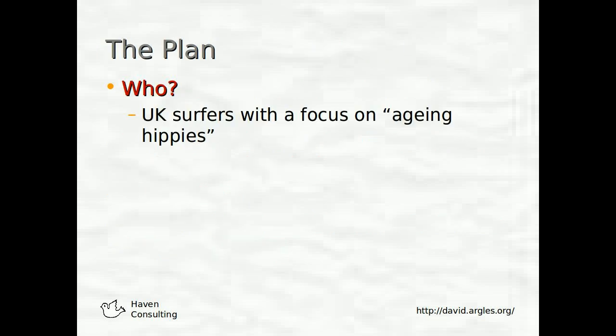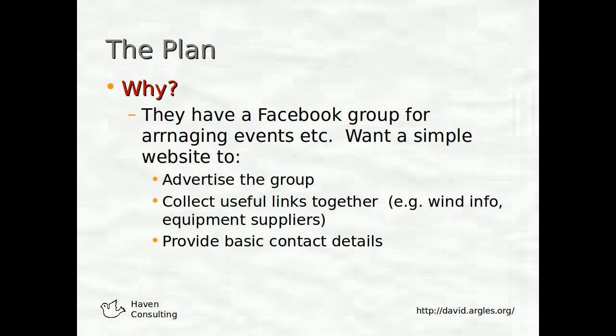What's the plan? We'll look at who we're providing this website for: UK surfers, with a focus on ageing hippies — people who have reached an age where you really shouldn't be doing this anymore, but are still enjoying it and don't want to give up. As for why, we'll assume this group already has a Facebook group for arranging events, and they want a simple website to advertise the group, collect useful links (wind information, equipment suppliers, that sort of thing), and provide basic contact details for people within the group.